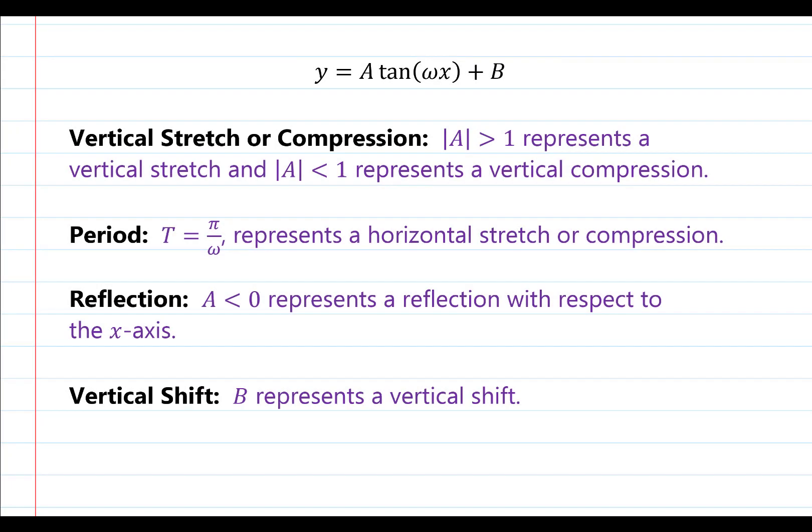The equation for the general tangent function is y equals a times the tangent of omega times x plus b, where a, omega, and b are values that represent transformations. These are most of the transformations you will experience with the tangent function. The only one I left off in this case is the phase shift or horizontal shift. So a is actually going to represent a vertical stretch or compression. We no longer call this an amplitude — that is only for sine or cosine.